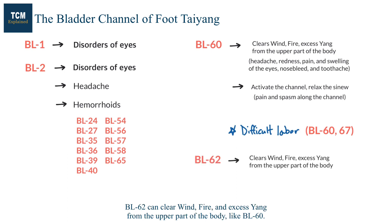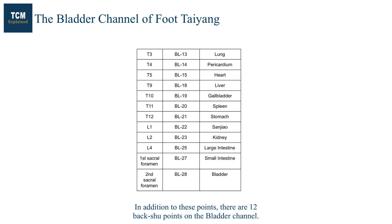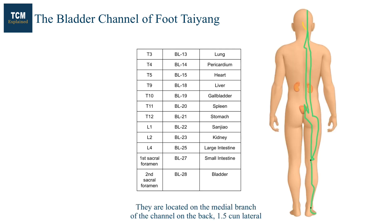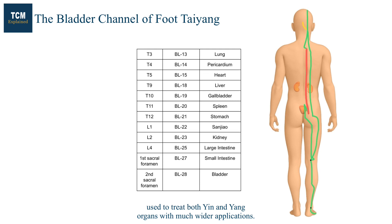Bladder 62 can clear wind, fire, and excess yang from the upper part of the body, like bladder 60. This point is classically indicated for daytime epilepsy, while kidney 6 is indicated for nighttime epilepsy. In addition, there are 12 back shu points on the bladder channel, each corresponding to one of the 12 organs. They are located on the medial branch of the channel on the back, 1.5 cun lateral to the spinous process of the thoracic and lumbar vertebrae and sacral foramen. They are classically indicated for diseases of yin organs, but in modern clinical practice, these back shu points are used to treat both yin and yang organs with much wider applications.